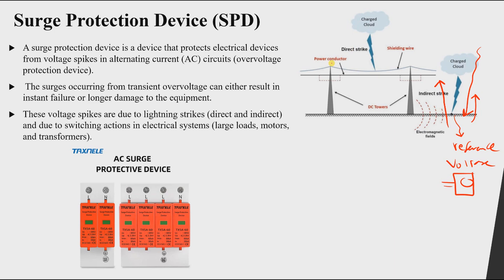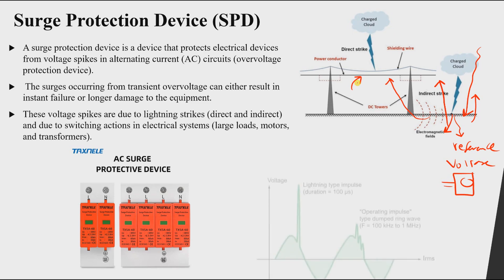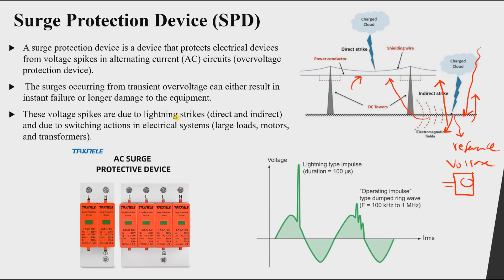When the lightning strikes the ground, remember it is a current flowing to ground — a very large current. This produces large electromagnetic fields that can affect nearby transmission lines and induce voltage on them, similar to coupling phenomena. So an indirect strike can cause overvoltage in two ways: by raising the ground potential and by inducing voltage through electromagnetic fields.